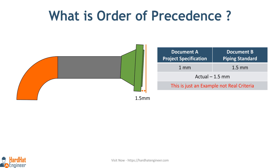Document A, which is the project specification, has a 1 mm acceptance limit. However, as per Document B, which is the piping standard, the acceptance limit is 1.5 mm.